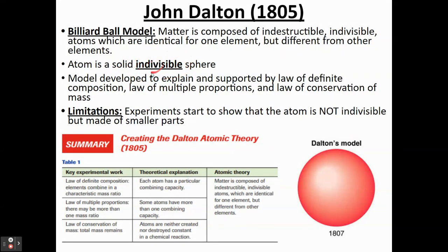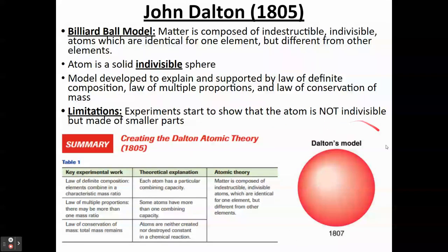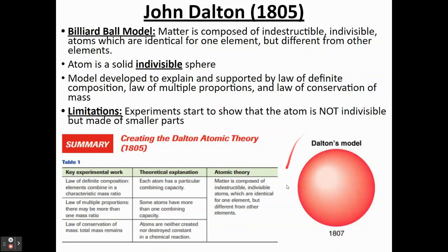You can't divide it into anything — this is the smallest you can get. But one of the main limitations is that further experiments started to show that the atom is not an indivisible sphere; there are probably smaller parts to it. Those smaller parts today are the protons, electrons, and neutrons. That was the main problem with Dalton's model — it didn't hold up to experiments that showed the atom is made up of smaller parts.